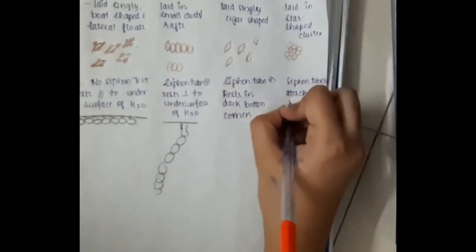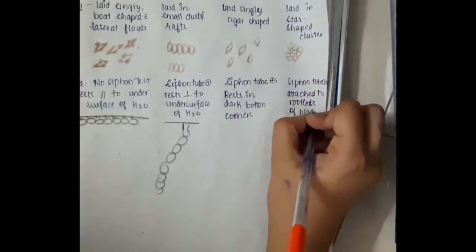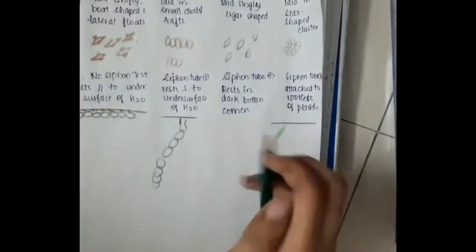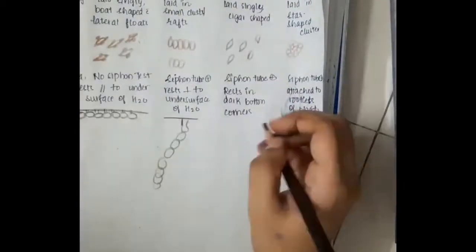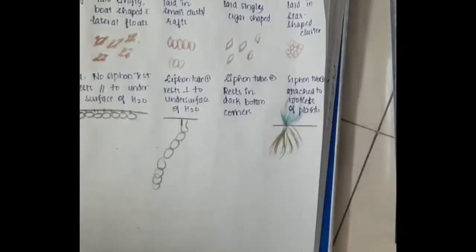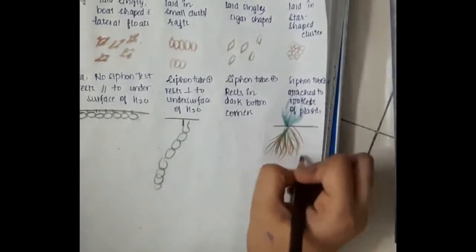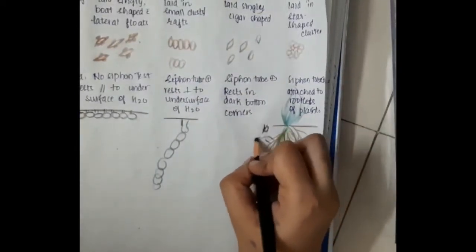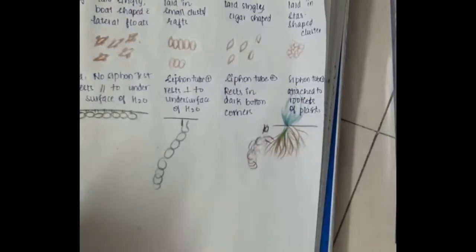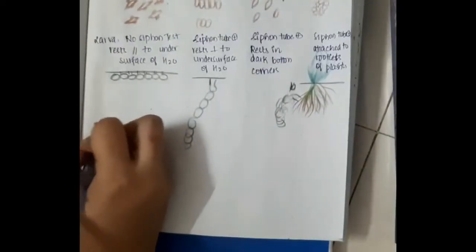In Mansonia, the larva has a siphon tube and it is attached to the rootlets of aquatic plants. These aquatic plants are growing underwater, and the Mansonia larva tube is attached to these aquatic plants. So the larva is attached via its siphon tube — that is the Mansonia larva.